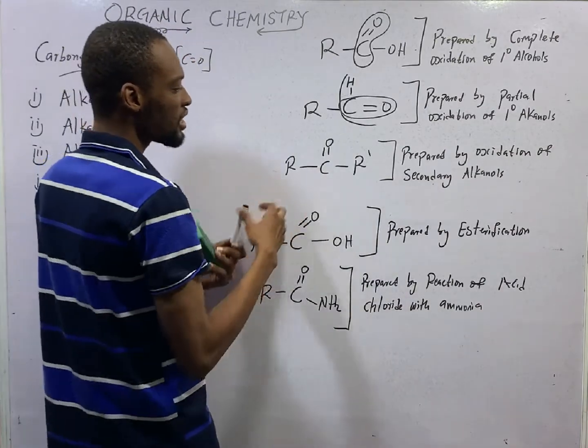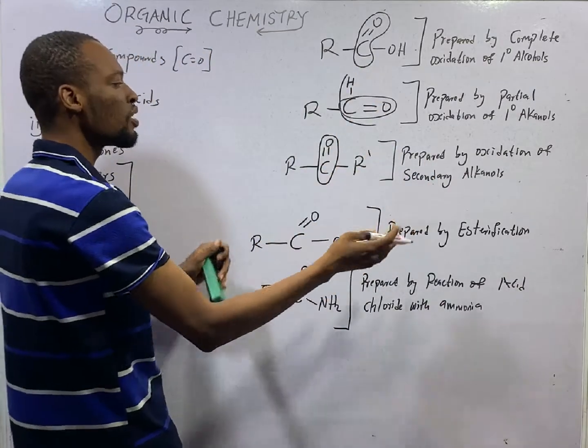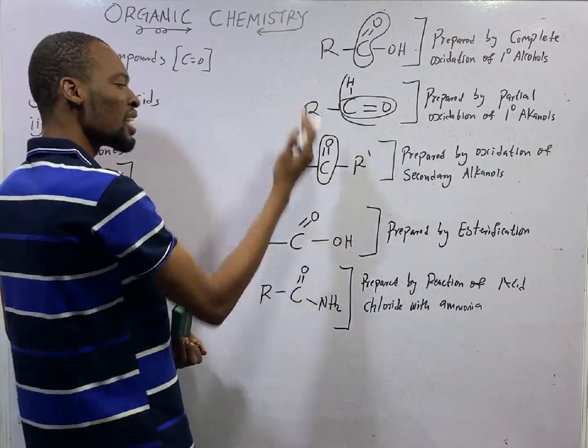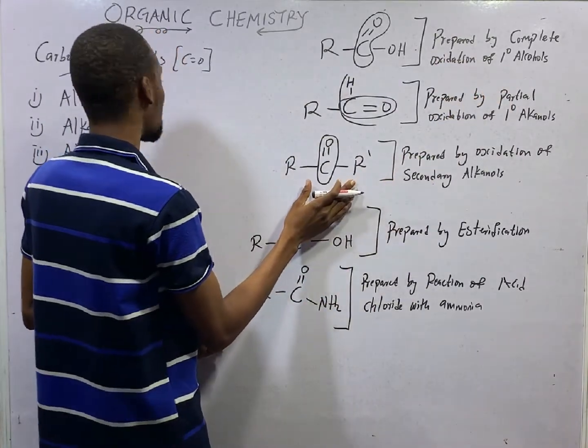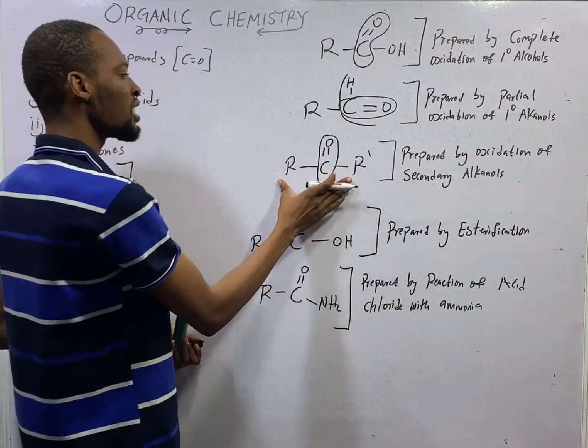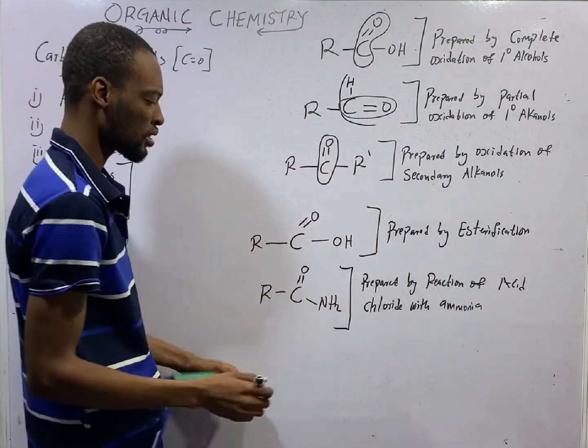Here, you see there is a C double bond to O in between two different alkyl groups. So, if this C double bond to O is at the middle, not at the terminal, it is referred to as the alkanone. So, this is an alkanone. And you see that it has the carbonyl functional group.